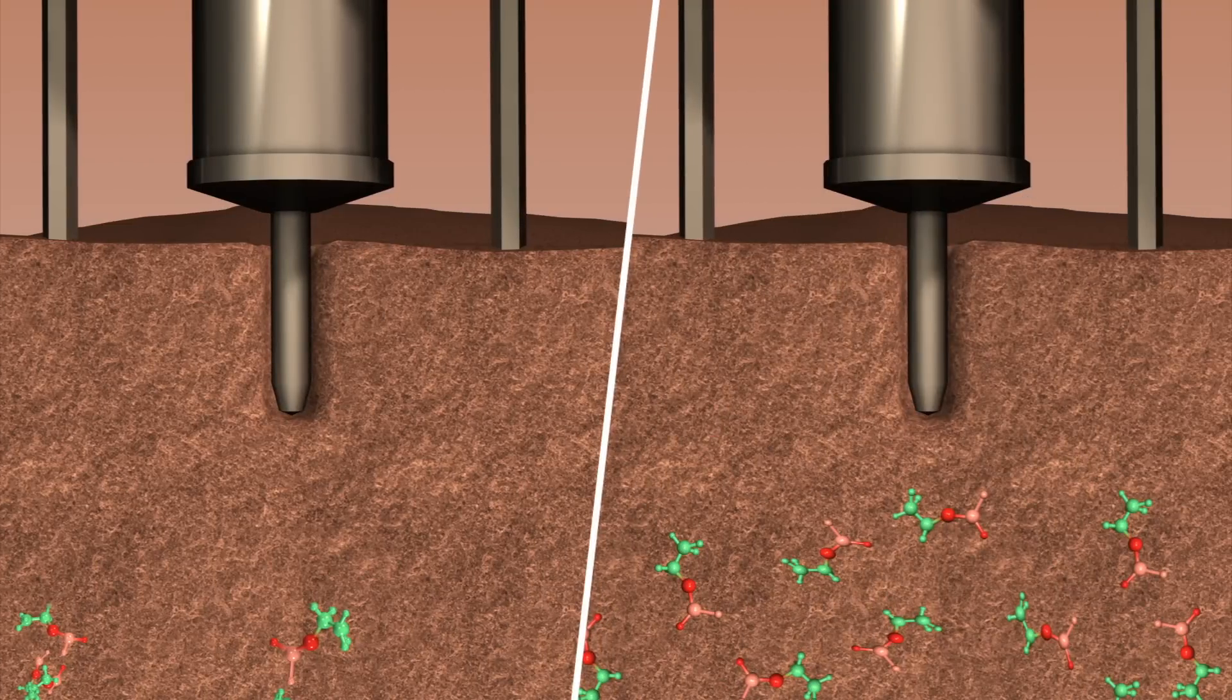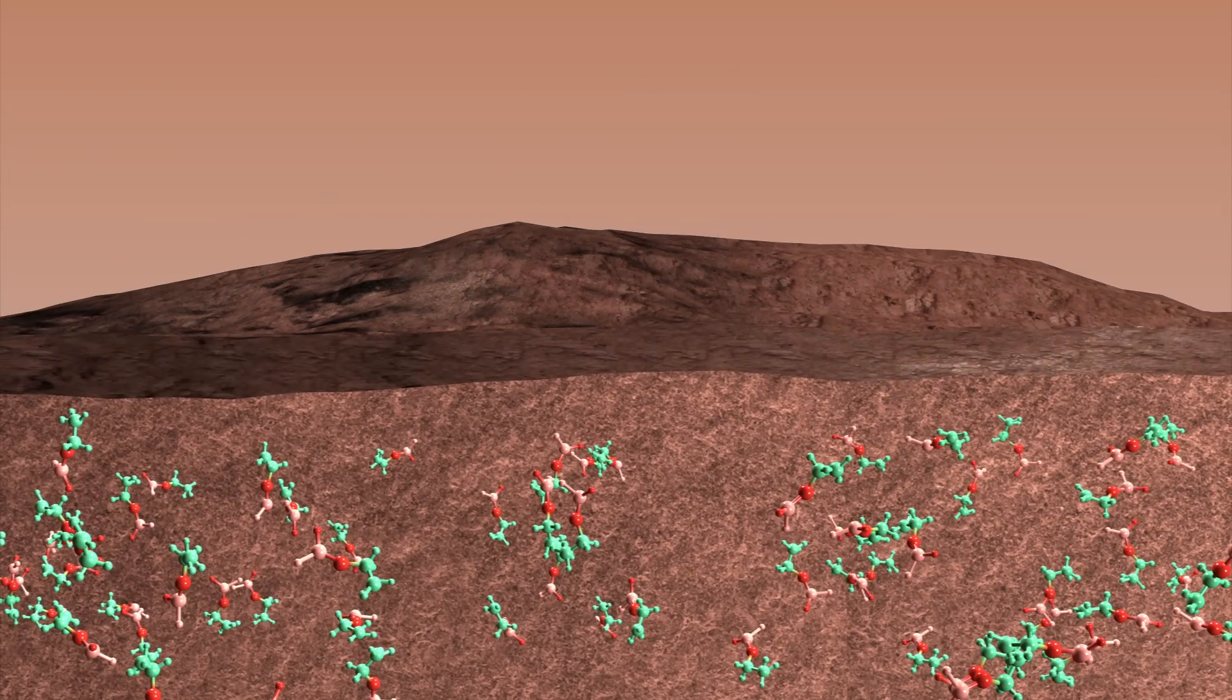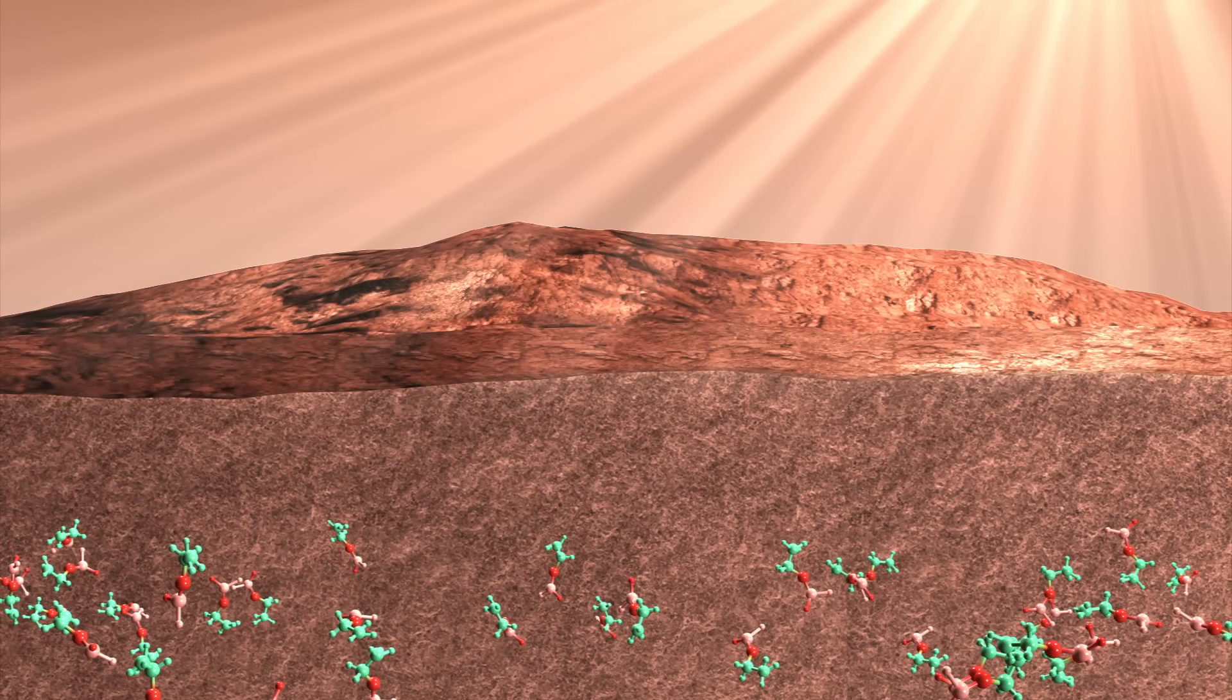Complex organic molecules within 2 inches of the surface are destroyed by cosmic rays after a few hundred million years.